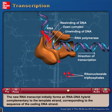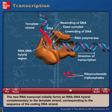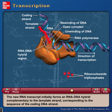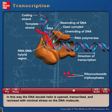The new RNA transcript initially forms an RNA-DNA hybrid complementary to the template strand, corresponding to the sequence of the coding DNA strand. In this way, the DNA double helix is opened, transcribed, and re-closed with minimal stress on the DNA molecule.